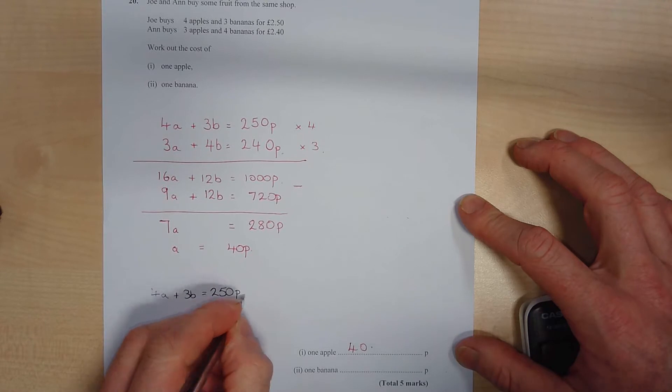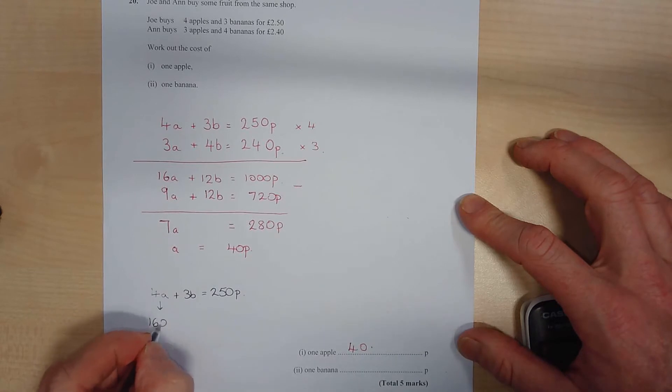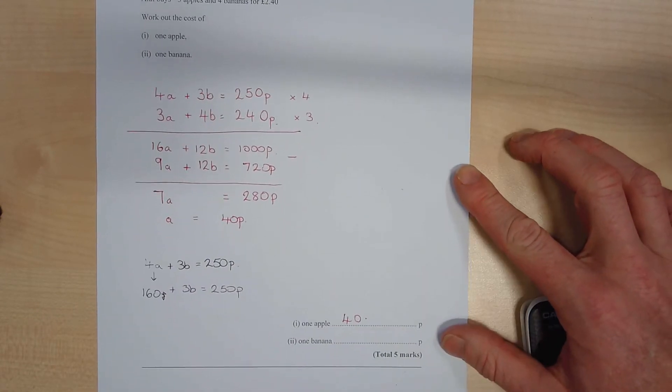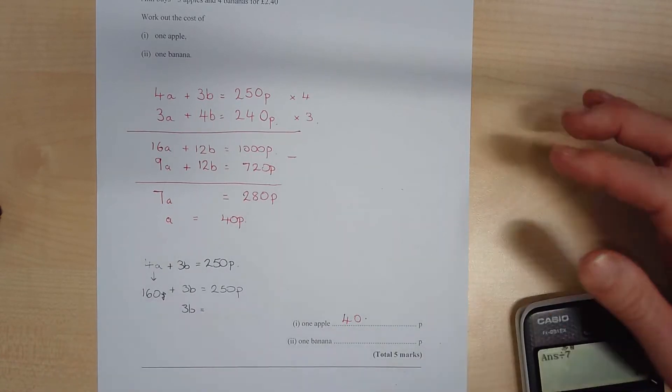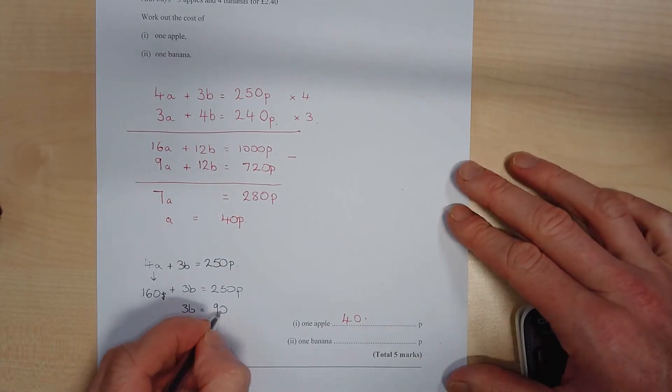We can pick any of these. I'm going to pick the 4 apples plus 3 bananas is 2 pounds 50 or 250p. But we now know that one apple is 40p, so 4 apples is going to be 160p plus 3 bananas is 250p.